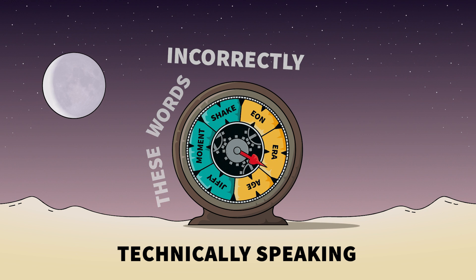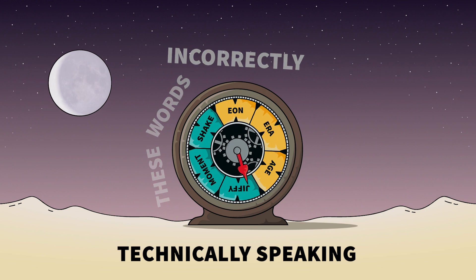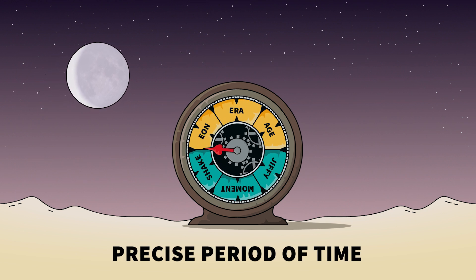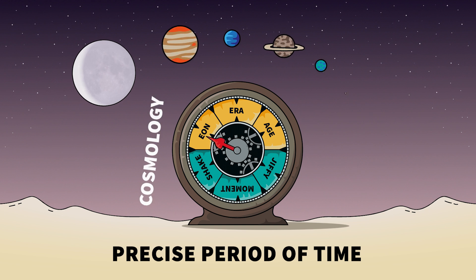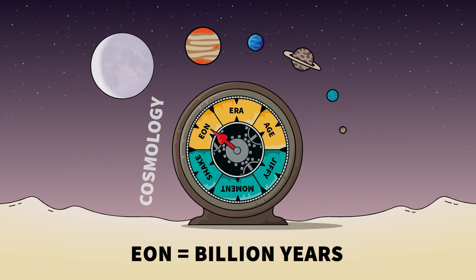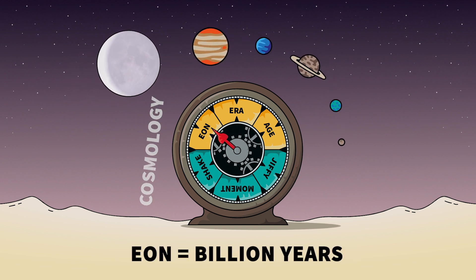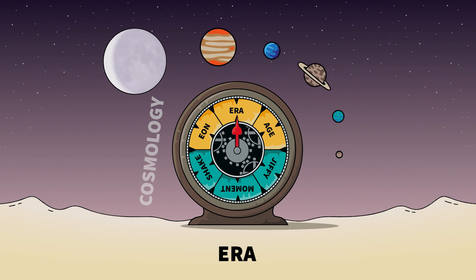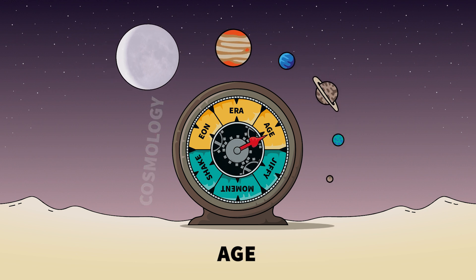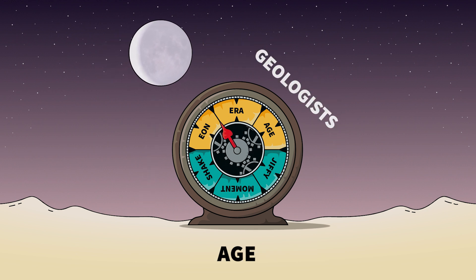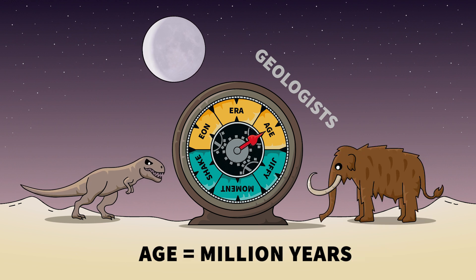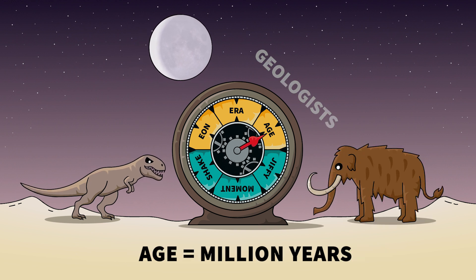Each of these units is meant to refer to a precise period of time. In cosmology, an eon is defined as a billion years. It shouldn't be confused with an era or an age, which are used by geologists to describe hundreds of millions and millions of years, respectively.